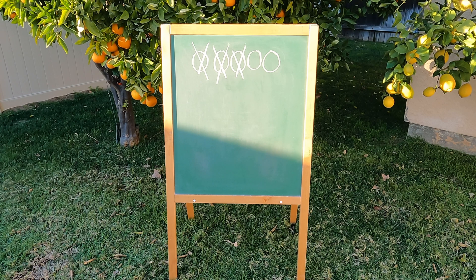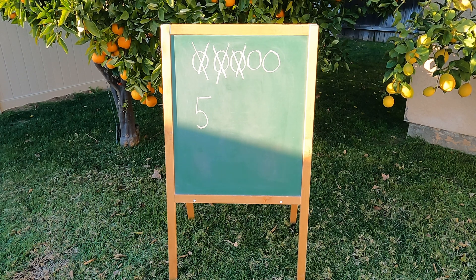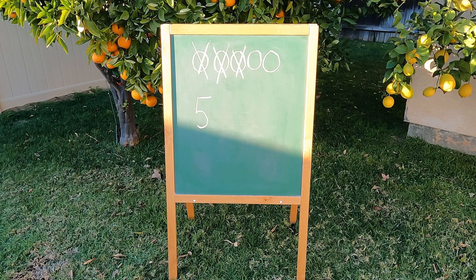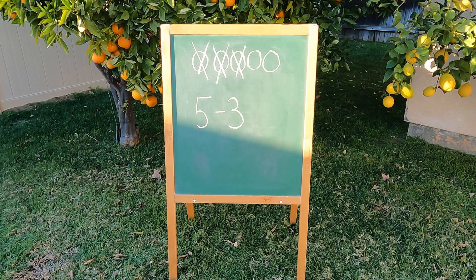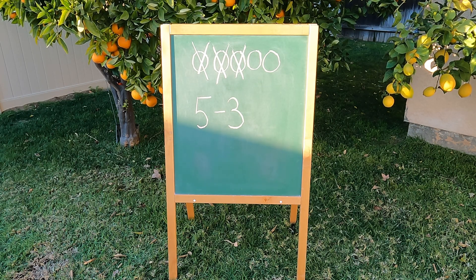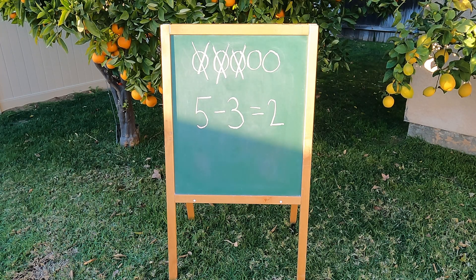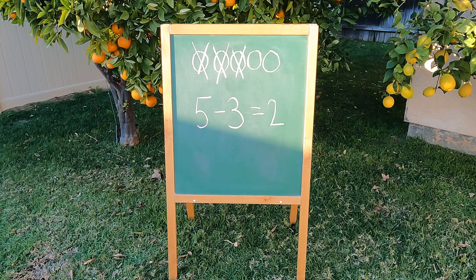Let's write our number sentence together. Axel had five cat treats to start with, so I'm going to write the number five. Professor Ginger was naughty and she came along and ate three of those cat treats. Because she ate them — she took them away — we're going to use a minus sign to show that we are subtracting. I'm going to write minus three, because she ate three, just like we crossed off three. And when I came back from answering the door, there were two cat treats left, just like in our picture — there are two circles without an X on them. So I'm going to write equals two. Let's read that number sentence together: five minus three equals two. Five cat treats minus three cat treats that Ginger ate equals two cat treats left.